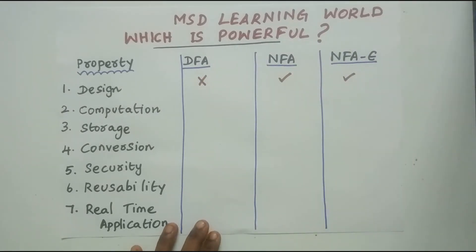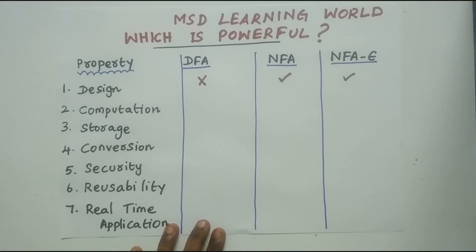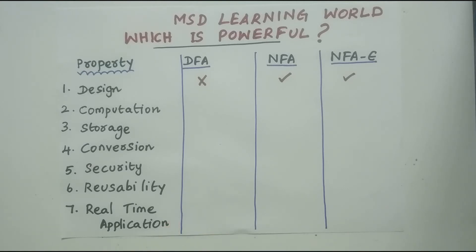Why is DFA not powerful while designing? Because designing a DFA is a very difficult process. For a simple set of strings it is easy, but when you have more constraints you have to carefully process the transition for each and every state. So designing a DFA is a very tedious process compared to NFA and NFA-epsilon. In summary, for the design property, NFA-epsilon and NFA are more powerful than DFA.